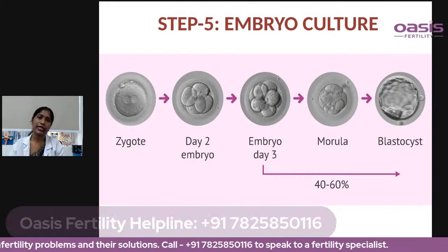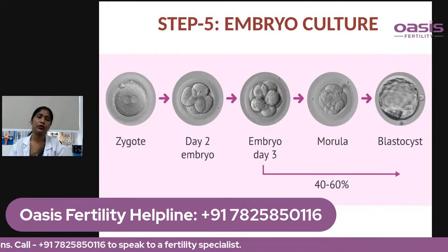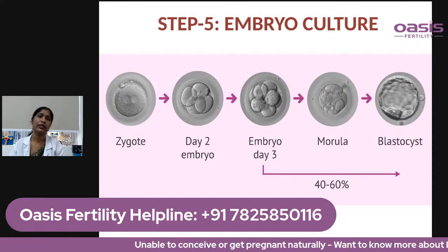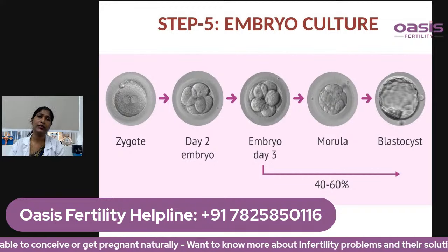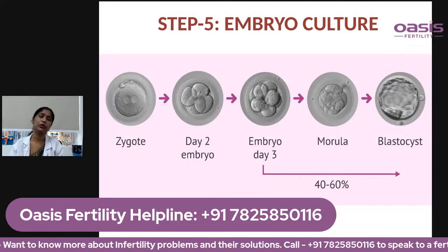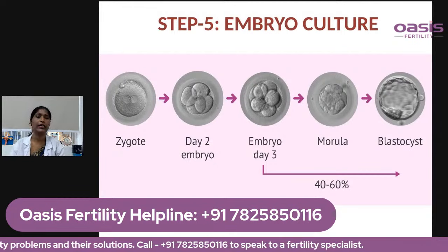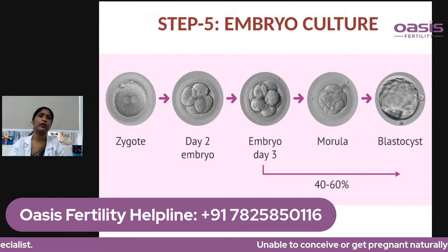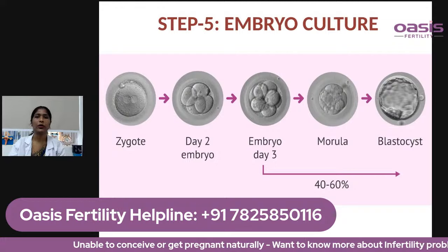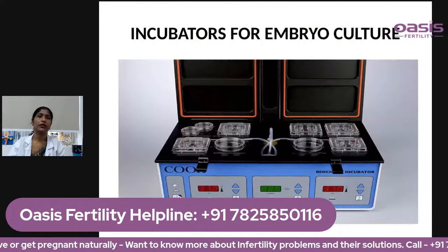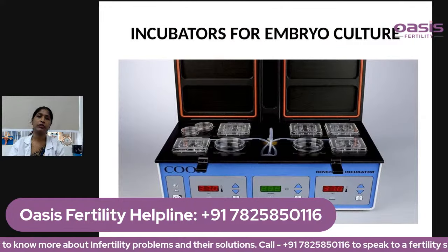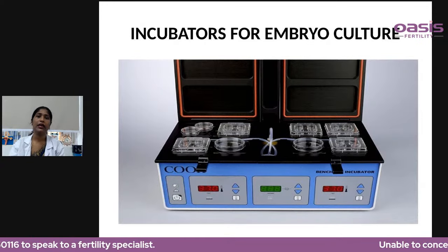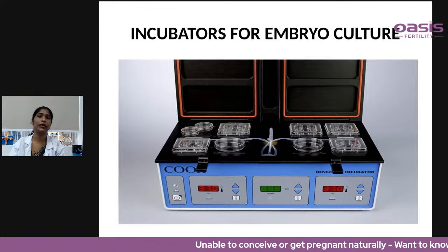Step five is embryo culture. Once fertilization occurs, the embryo is left to grow in a well-controlled lab environment where temperature, humidity, and gases are maintained. By day three, we check how many embryos have formed. Most of the time, we grow embryos until day five or six. Embryos that reach the day five stage are called blastocysts. After this stage, the blastocyst requires a mother's uterus to grow further. Separate, labeled dishes are used for each couple in the incubator.